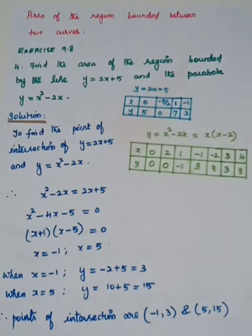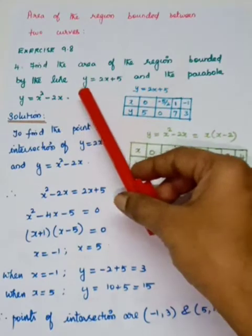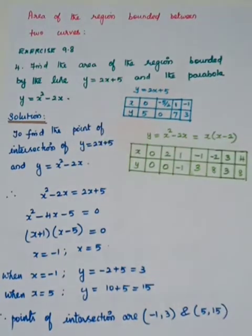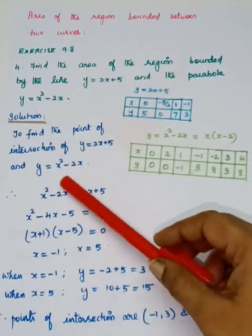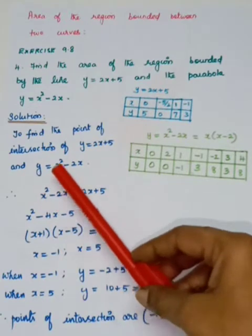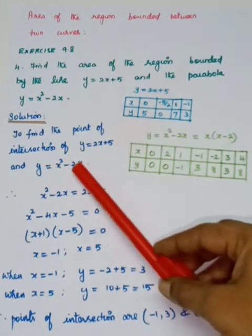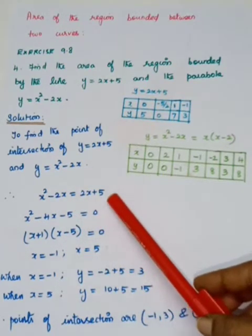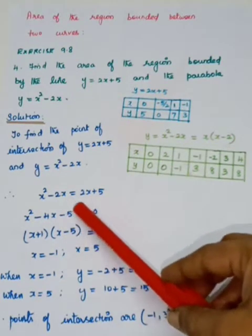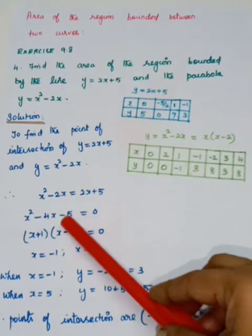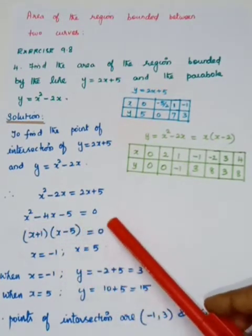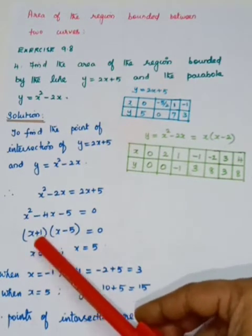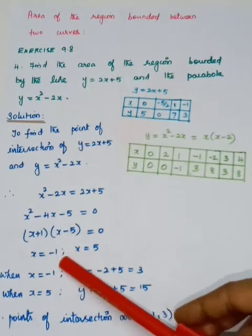Problem 4: Find the area of the region bounded by the line y = 2x + 5 and the parabola y = x² − 2x. Here one line and one curve are given. First, find the point of intersection. Substituting x² − 2x in place of y into the line equation gives x² − 2x = 2x + 5, which simplifies to x² − 4x − 5 = 0. Factorizing gives (x + 1)(x − 5) = 0, so x = −1 and x = 5.